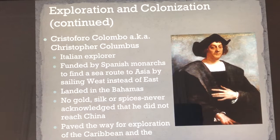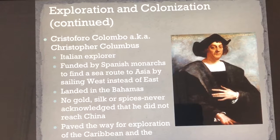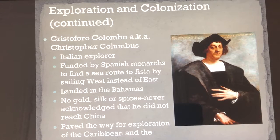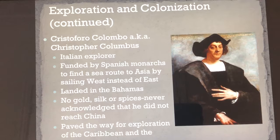Our last explorer is an Italian who goes to the Spanish government — not Portuguese. He's trying to figure out an easier way: since the Portuguese have already gotten around Africa, could they sail west to get to Asia and India? He predicts the Earth is a little bit smaller than it is, and he lands in the Bahamas thinking he has landed in India. He finds these places rich in resources and basically paves the way for Caribbean exploration and the Americas, which we'll talk about later.